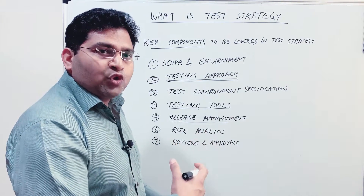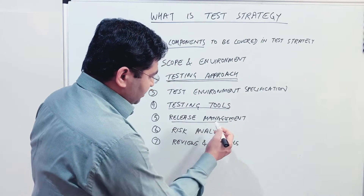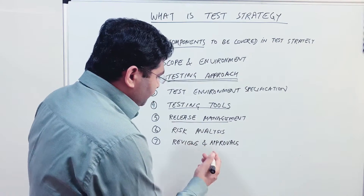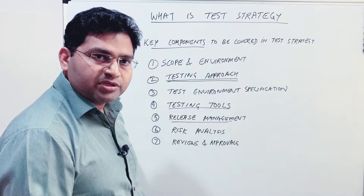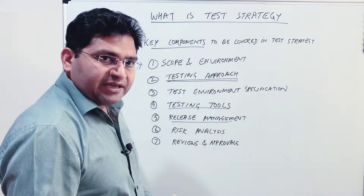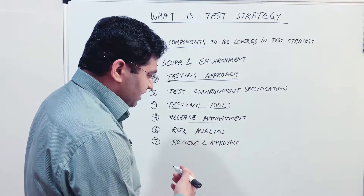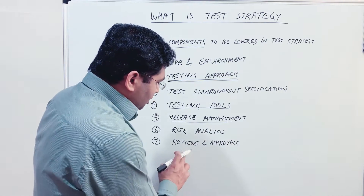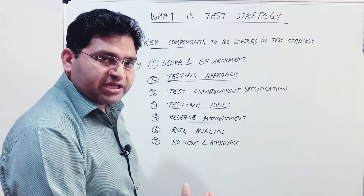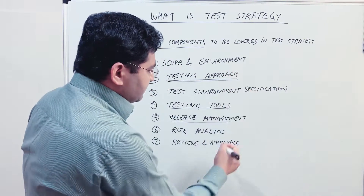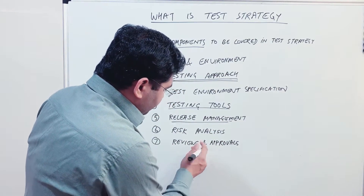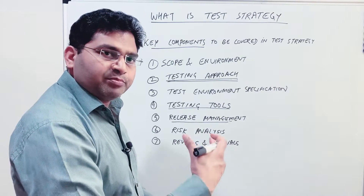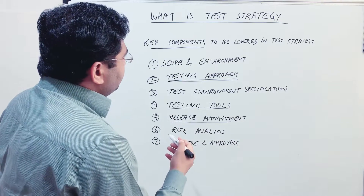The next component is release management — how builds will be managed, how releases will happen to testing, and the frequency of builds. Then there is risk analysis — what all projects need to consider when performing risk analysis. Finally, reviews and approvals define who the reviewers and approvers are for any project, such as the test manager and project manager, and these roles are referenced in each project's test plan.